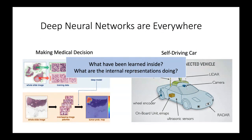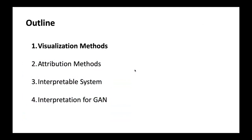For example, if you contract a disease, are you willing to accept a decision result produced by a neural network? Are you willing to put your own child into a self-driving car? I think most people will answer no at this stage because we want to know why — we want more reason and evidence to support the decision given by the network. So how to answer those two questions is the topic of today's lecture, which will cover four parts.